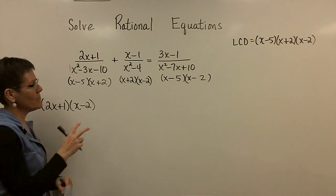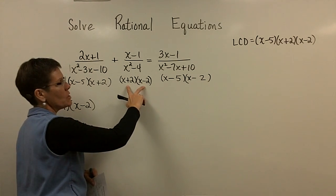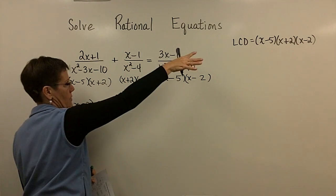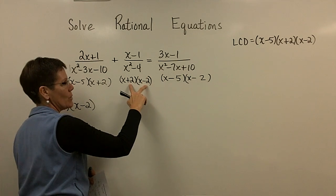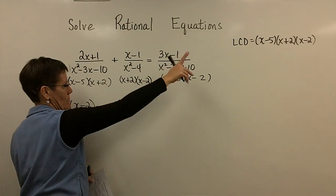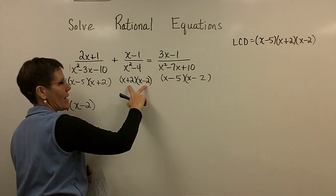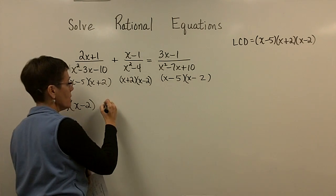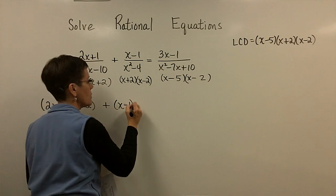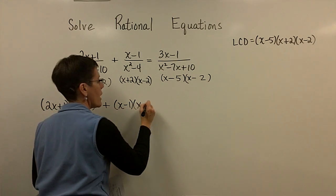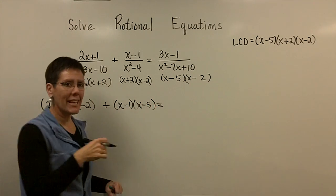It's the x minus 2, right? So that 2x plus 1 has to be multiplied by the missing piece, and the denominators are gone, totally gone.